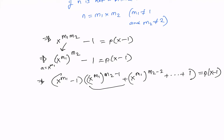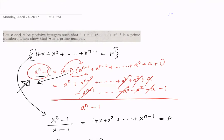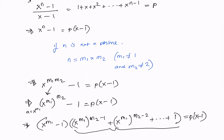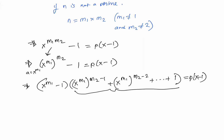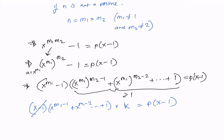The second factor, call it k, is clearly greater than 1, because x is a positive integer and adding powers of it to 1 gives something greater than 1. Furthermore, x^m₁ - 1 can itself be factorized as (x - 1)(x^(m₁-1) + x^(m₁-2) + ... + 1). Substituting and canceling (x - 1) from both sides gives (x^(m₁-1) + ... + 1) · k = p.